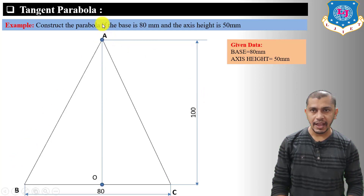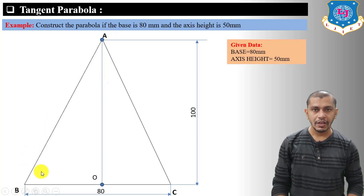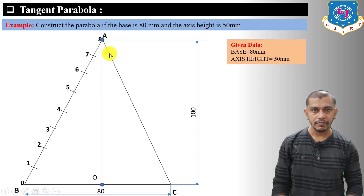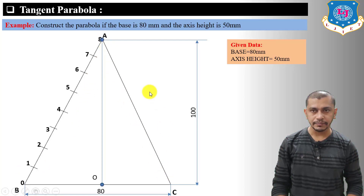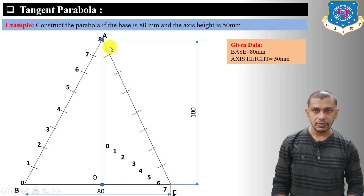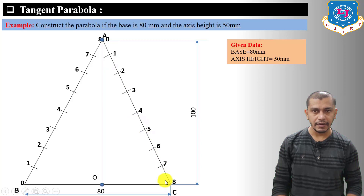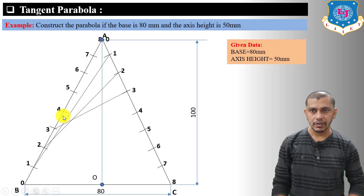Connect A to B and A to C. Now divide AB into eight equal number of divisions: 0, 1, 2, 3, 4, 5, 6, 7, 8. Divide AC into eight equal number of divisions as well, but number starting from A: 0, 1, 2, 3, 4, 5, 6, 7, 8.